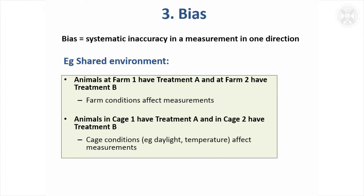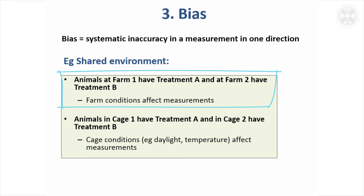One common cause of bias is a shared environment. For example, in a hen housing study, if you look at a certain group of animals given one intervention at one farm, and another group at a different farm with a different intervention, that's not a good design at all because the farms might be quite different in how they're run, and that might cause your difference in results rather than the intervention or treatment effect.